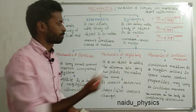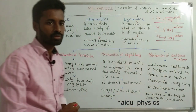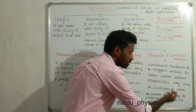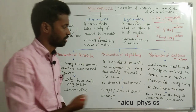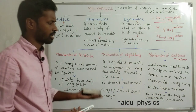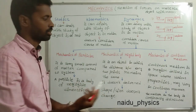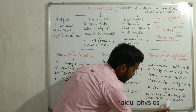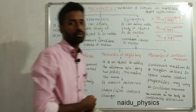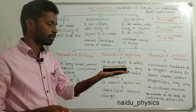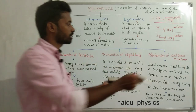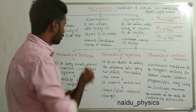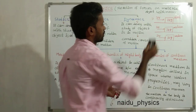That is called a Rigid Body. Another one: Continuous Media. Continuous Media is a region defined in space where various properties may vary in a continuous manner. Various properties like velocity, temperature, pressure, or density — these change continuously. In another sense, the matter in the body is continuously distributed.